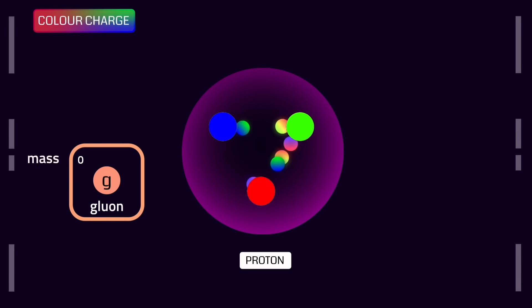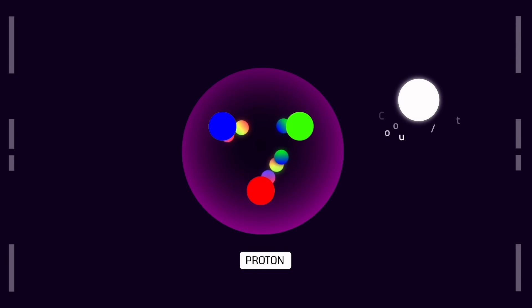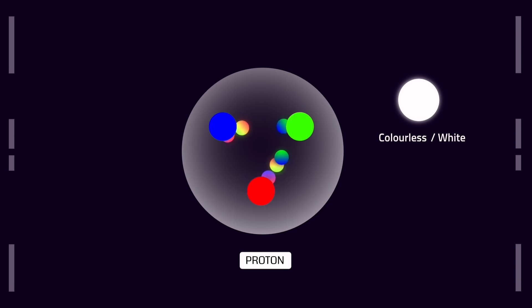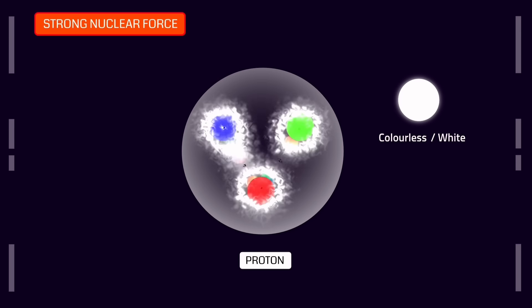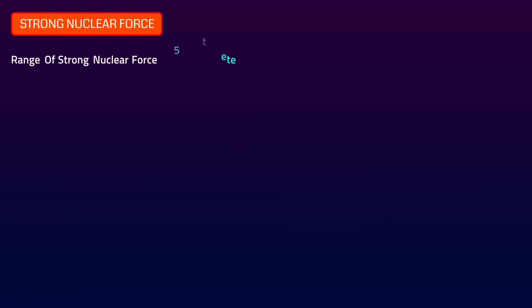However, the same color cannot exist simultaneously in two quarks. For example, in a proton, if one quark has a red color, the remaining two quarks will have green and blue. Thus, three quarks in a baryon particle always have different colors by exchanging gluons. If we combine the red, blue, and green colors, we end up with no color. Therefore, the proton is a colorless particle, and all baryon particles are colorless. That force is simply the color charge that involves the exchange of gluons between quarks, binding quarks together and creating the strongest force in the universe — the strong nuclear force.